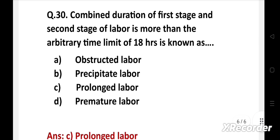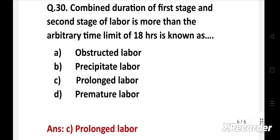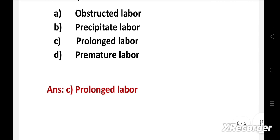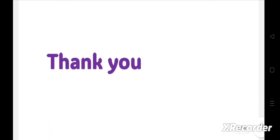Right answer is option C, prolonged labor. Labor is said to be prolonged when total duration of first and second stage is more than 18 hours. We should do early detection of any malpresentation, malposition, or congenital abnormality, use of partograph, and judicious use of augmentation for prevention of prolonged labor. This is today's video. Thank you so much for watching my video.